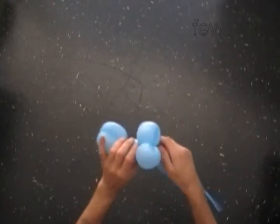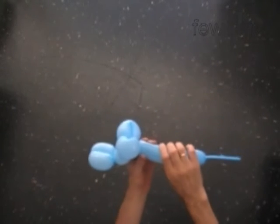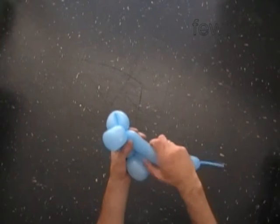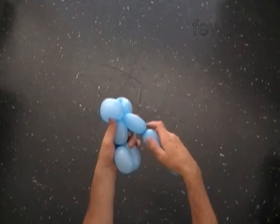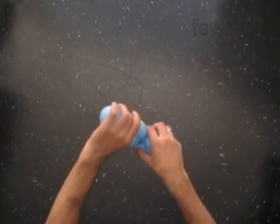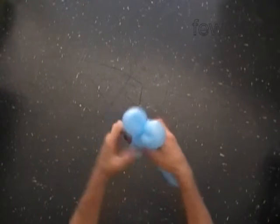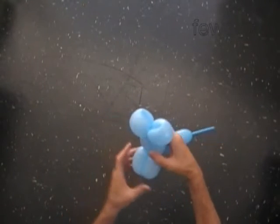The next bubble we twist to make the second eye. Twist the sixth 2 inch bubble. Lock both ends of the chain of the last four bubbles in one lock twist. We have made the head of the dog.